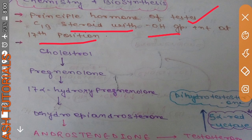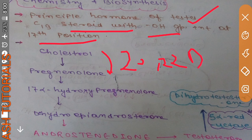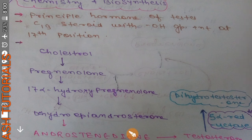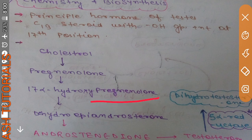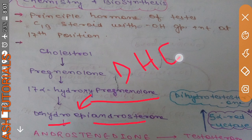Testosterone is synthesized from cholesterol. Cholesterol is converted into pregnenolone by the 20,22-desmolase enzyme. Pregnenolone is then converted to 17-alpha-hydroxypregnenolone by the enzyme 17-alpha-hydroxylase. This 17-alpha-hydroxypregnenolone is then converted into dehydroepiandrosterone, also called DHEA.